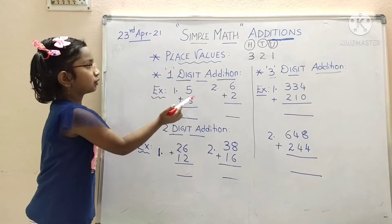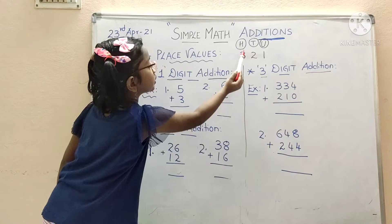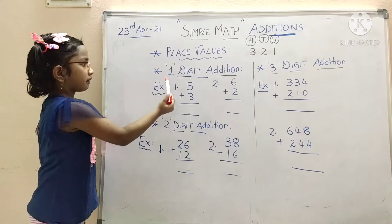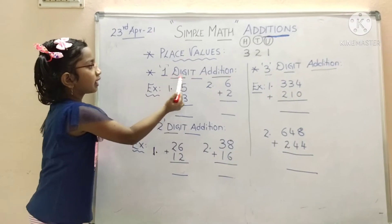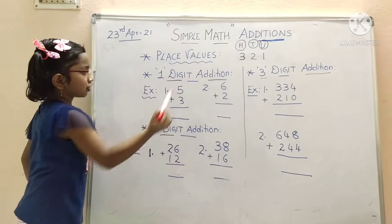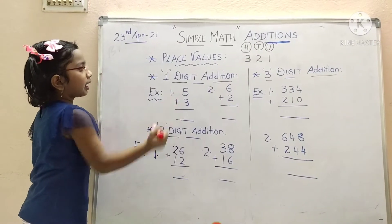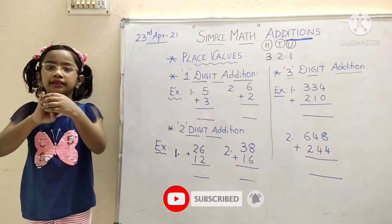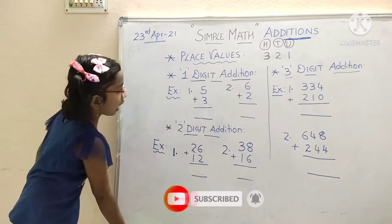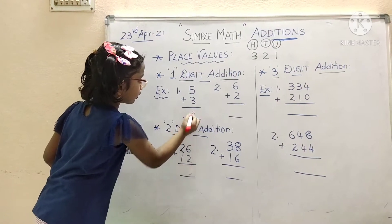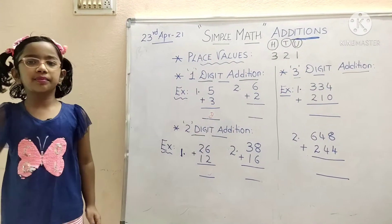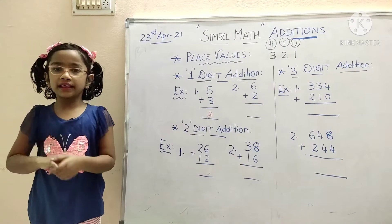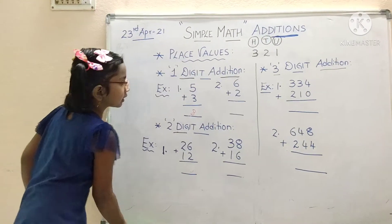First, place value: one digit is units, two digits is tens, three digits is hundreds. Let's start with additions — one digit addition. First one: five plus three. Five in mind, three in hand — after five: six, seven, eight. The answer is eight. Next, six plus two. Six in mind, two in hand — after six: seven, eight. The answer is eight.